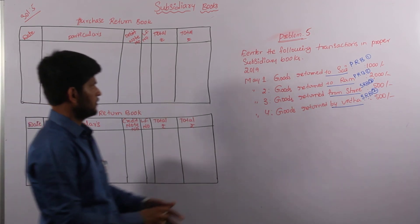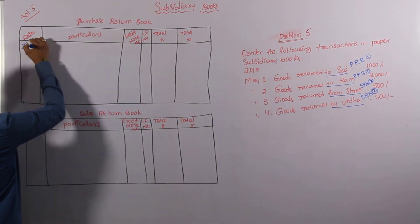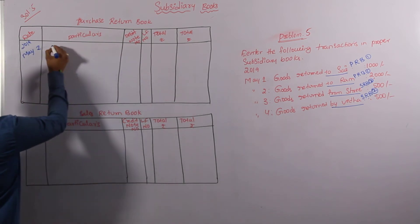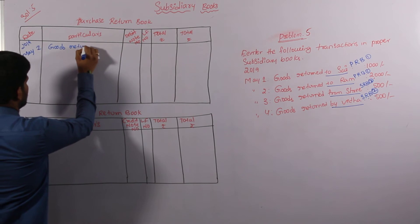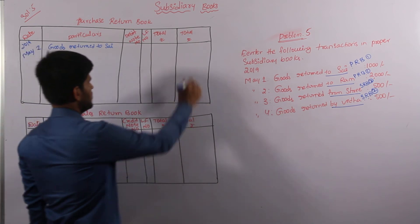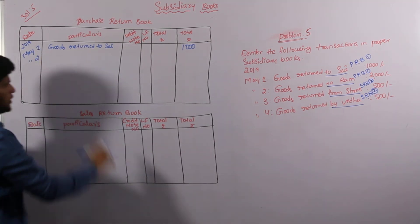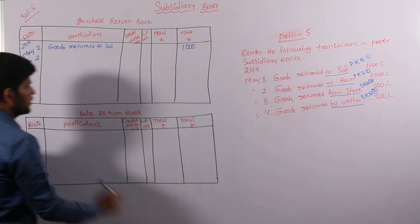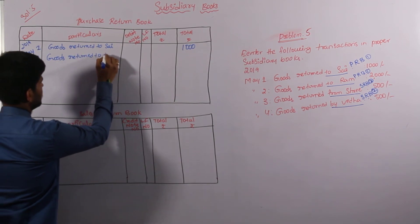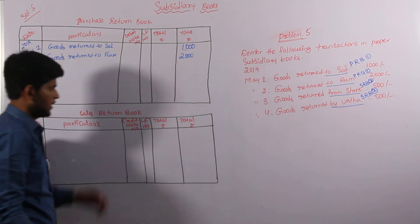The first transaction, 2019 May 1st, will be in our Purchase Return Book. Enter the month and date. Goods return to Sai, value is 1000. The second transaction date is also important — it is also in our Purchase Return Book. Return to Ram, worth of second transaction is 2000.